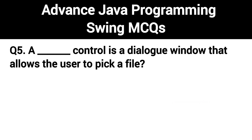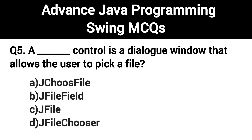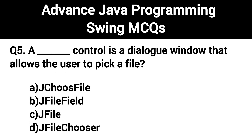Q5. A dialog control is a dialog window that allows the user to pick a file. The right answer is Option D: JFileChooser.